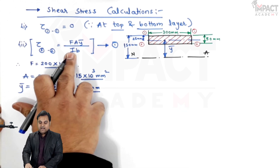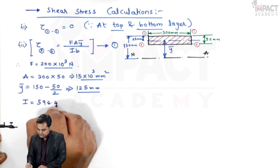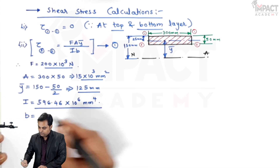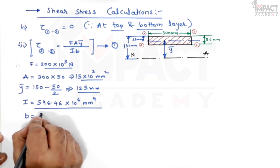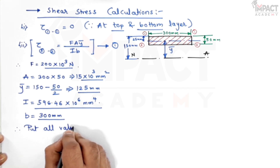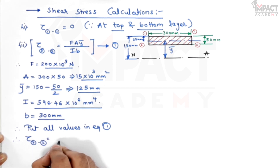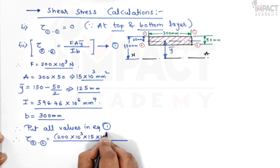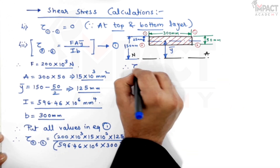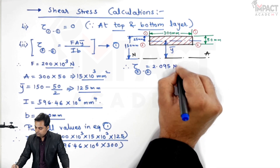I is the moment of inertia for the complete section: 596.46 into 10 raised to 6 mm raised to 4. B, the width at layer 2, is 300 mm. Substituting all values into equation 1, tau at section 2 comes out to be 0.095 Newton per mm squared. This value is the same at the bottom layer as well, since the section is symmetric.